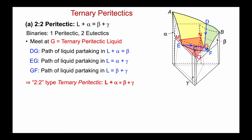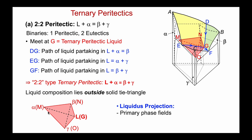The compositions of all the phases: G is the ternary peritectic liquid, N is the composition of beta, M is alpha, and O is gamma. All three of these compositions lie in the same plane at the same fixed temperature — it's invariant. Notice that I'm now using a trapezoid to represent the four-phase equilibrium, with the liquid composition at G lying outside the triangle formed by the three coexisting solid phases — characteristic of any peritectic.